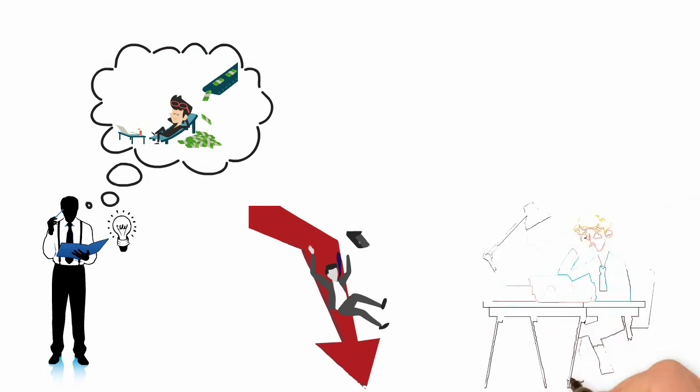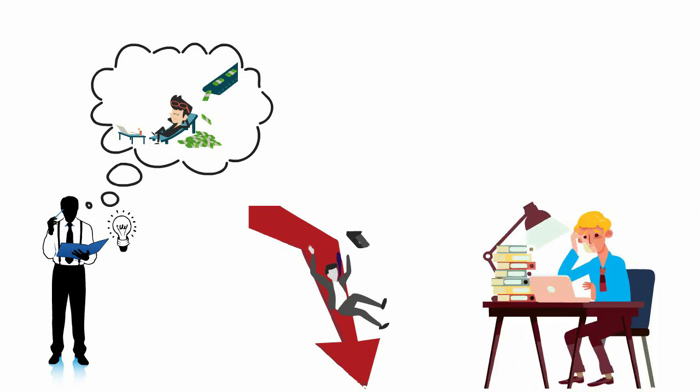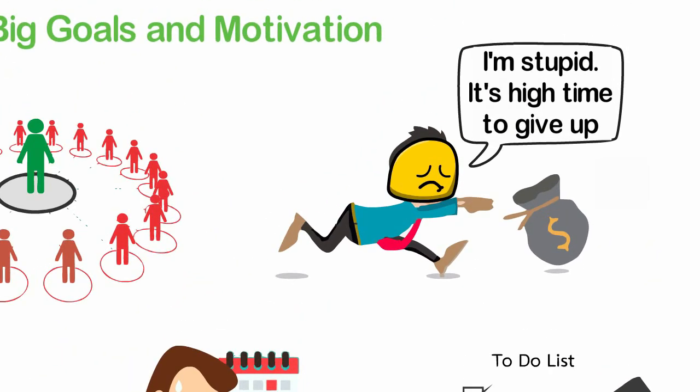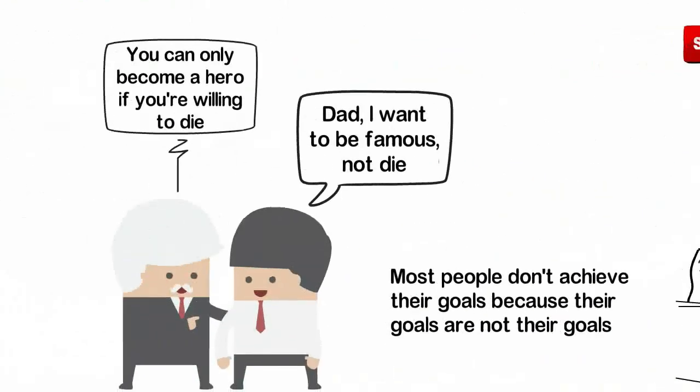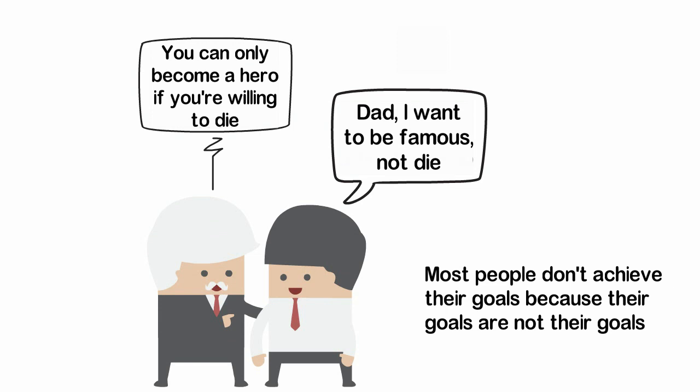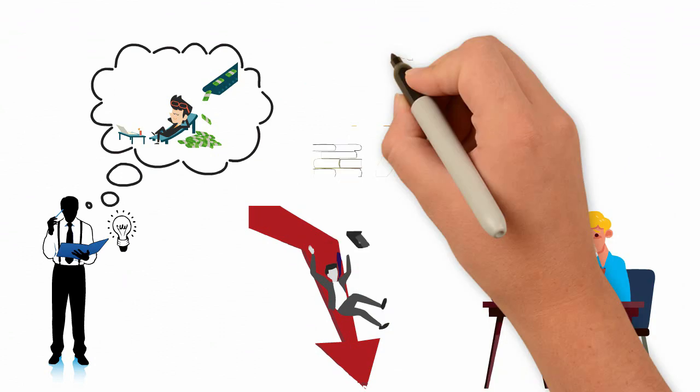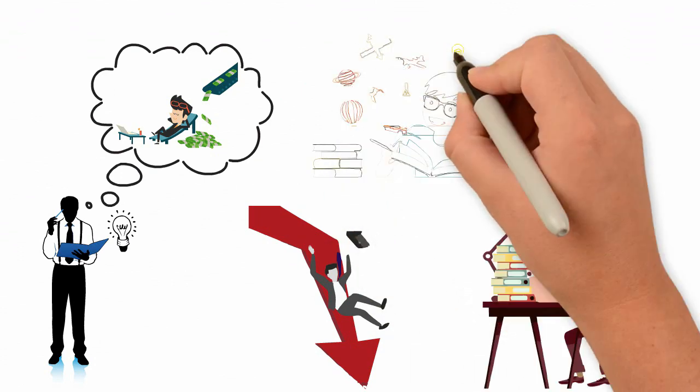Almost everyone who told me that they wanted to start a business when I started either gave up or never started at all. What is the difference? Most of them were driven by societal goals. Their goals are not driven by their values, so they are not willing to die for it. The father in my opening story asked his son, can you die to become a hero? To which his son said no, I want to become famous. I don't want to die.